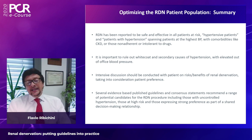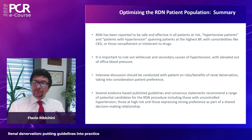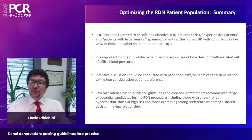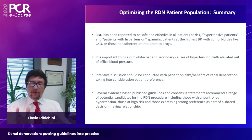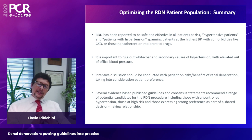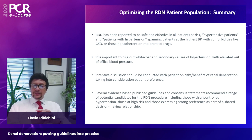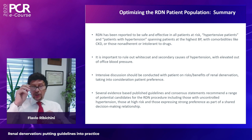Renal denervation has been reported safe and effective both in hypertensive patients and in more complex clinical situations, including chronic kidney disease and non-adherent patients. It is always important to rule out secondary causes. Intensive risk-benefit discussions should be conducted, and published guidelines and consensus documents recommend a range of candidates — from those with uncontrolled hypertension to high-risk patients and those expressing a strong preference — as part of shared decision-making.